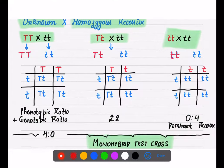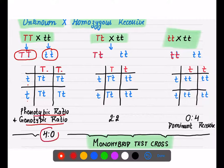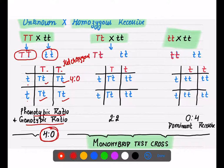If your unknown genotype is homozygous dominant and you cross it with homozygous recessive, making the checkerboard, the phenotypic and genotypic ratios will always be the same. All four offspring are tall and all are heterozygous tall. So the ratio is 4:0 — four dominant and zero recessive.